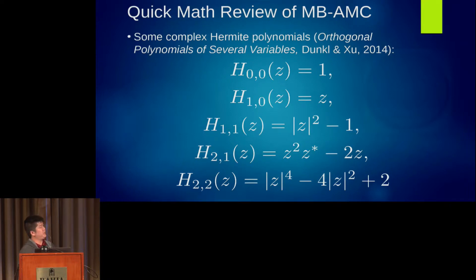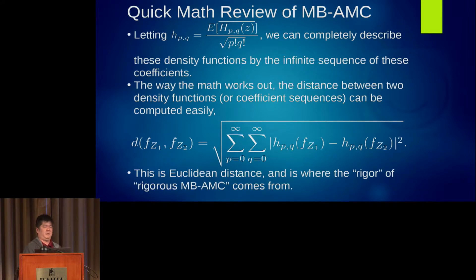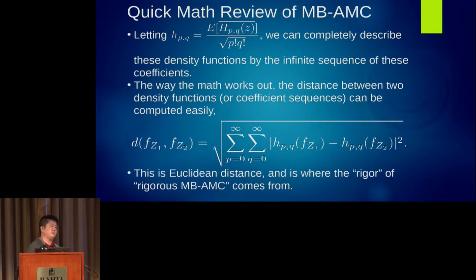Probably the most interesting one is the H2-1 term — it's got a Z-squared and a Z-conjugate in there. You can see that you can combine all these guys; they're all orthogonal, and you can compute distances. That Euclidean distance is kind of how I came up with the term 'rigorous moment-based ModRec' last year.